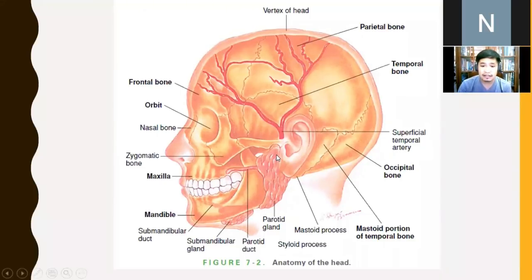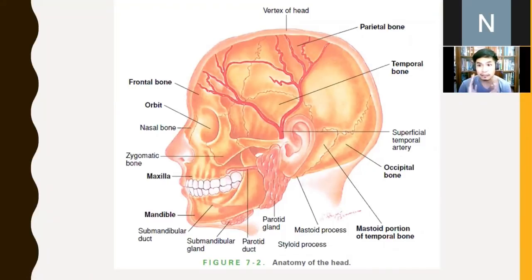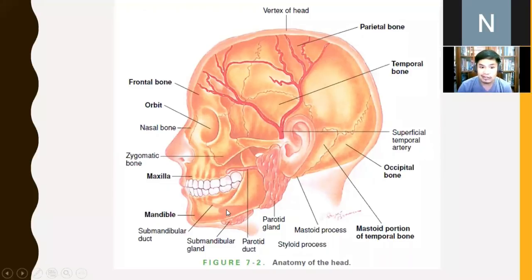Observe the different glands. You have your parotid glands — salivary glands. The parotid duct opens at the second upper molar at the buccal mucosa. You have the submandibular glands just below the mandible, and the submandibular duct will open at the sides of the lingual frenulum.